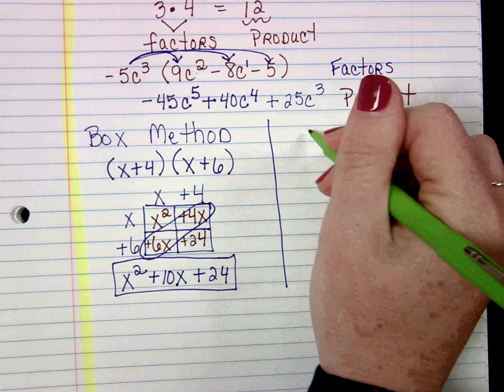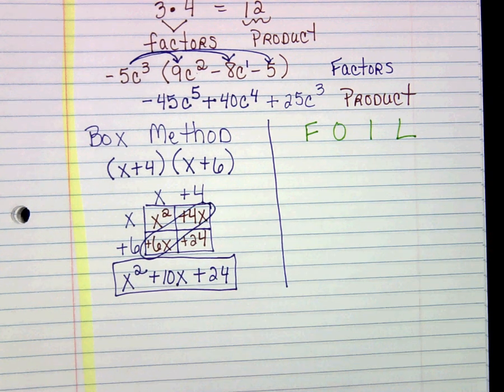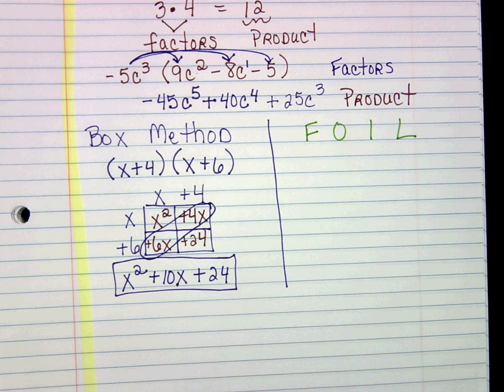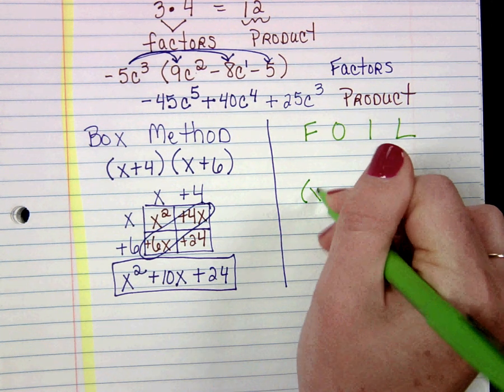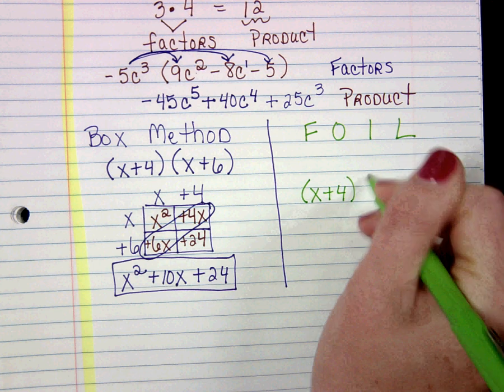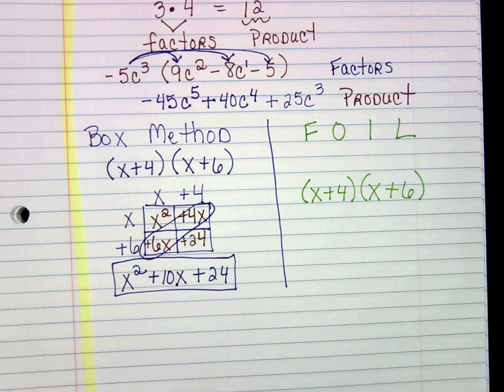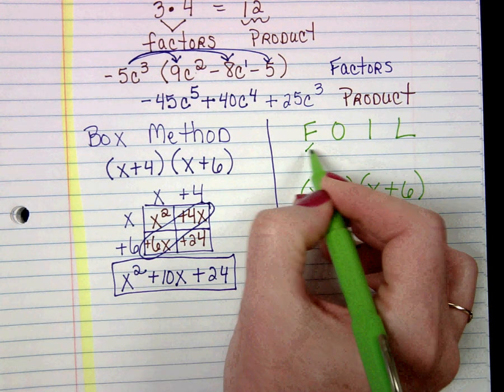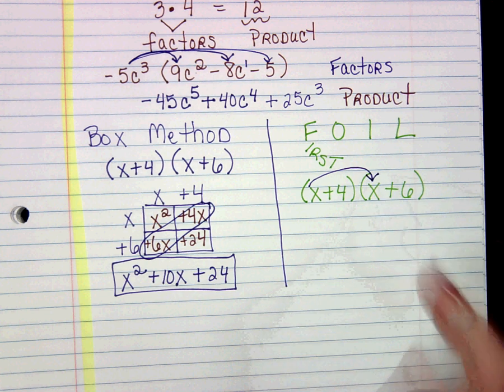The other method has been around since the dark ages, and it is called FOIL. It's like distributing. Honestly when I use FOIL I don't even really use the words, but I want to tell you what it means. We're going to use the same problem that we just did so we know what our end results should be. The acronym FOIL tells us to multiply our first terms together. Those first terms would be x times x. x times x is x squared.